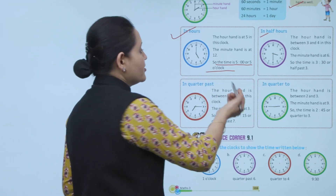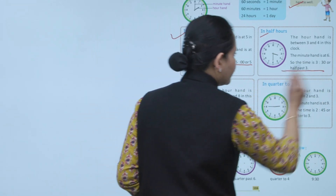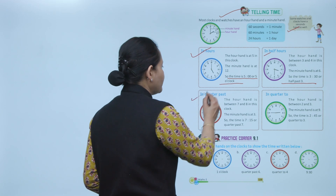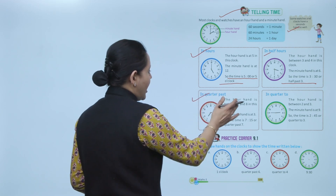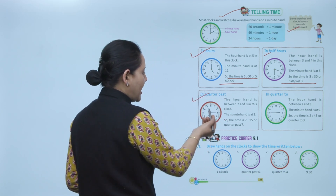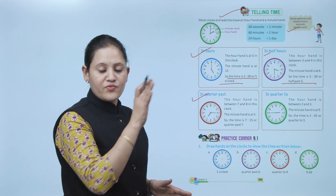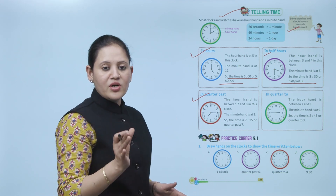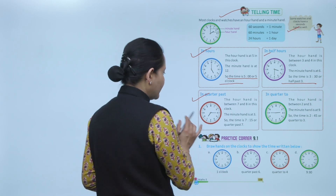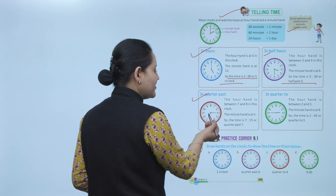For quarter past: in this clock the hour hand is between 7 and 8, and the minute hand is on 3. The 3 means 15 minutes, so one quarter is 15 minutes. We will say the time is 7:15.